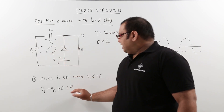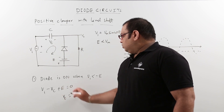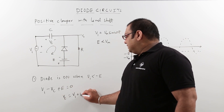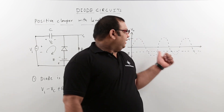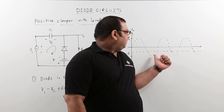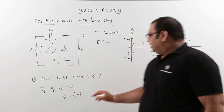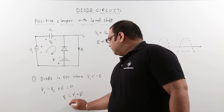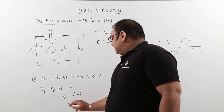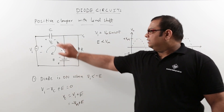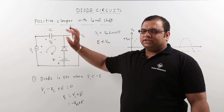From the loop equation, Vc equals Vi plus E. The maximum input when the diode is conducting is the peak value minus Vm. Substituting this value, Vc equals minus Vm plus E. That is the peak voltage across the capacitor.